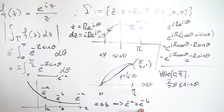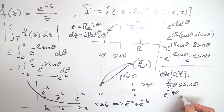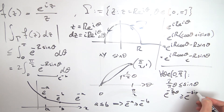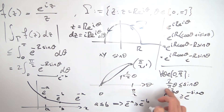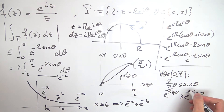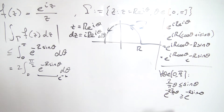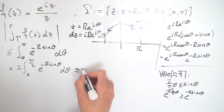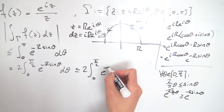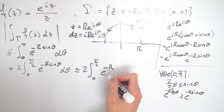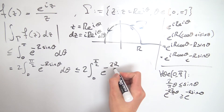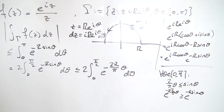Using this upper bound, we conclude that our integral is less than or equal to 2 times the integral from 0 to pi over two of e to the minus 2r over pi times theta d theta. This is now a straightforward calculus one integral since the exponent is linear in theta.